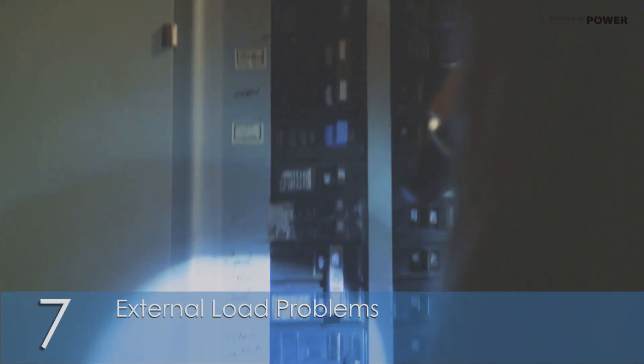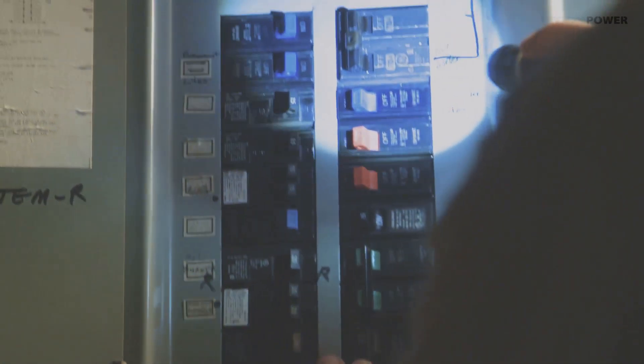Number seven, external load problems. If there is something off with the load your generator is supplying power to, it can cause the breaker to trip.